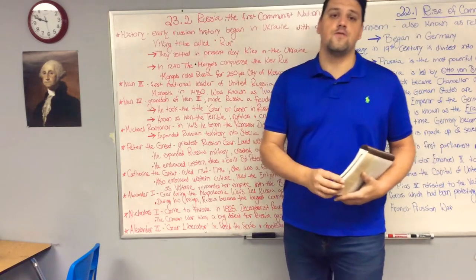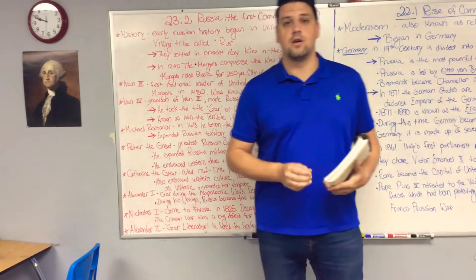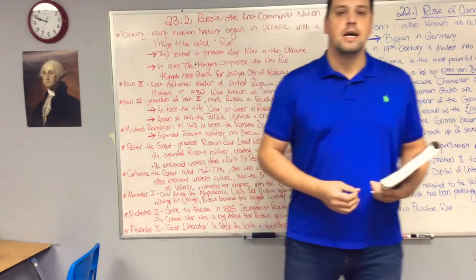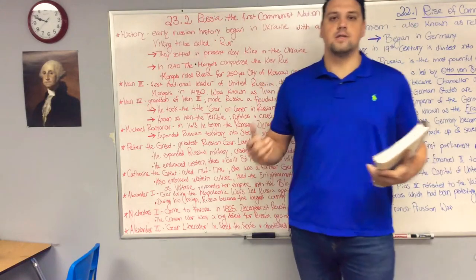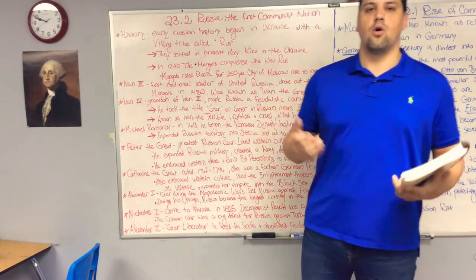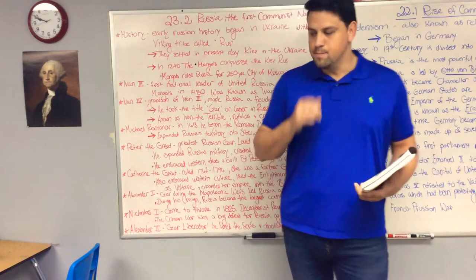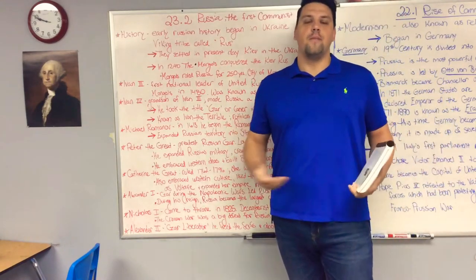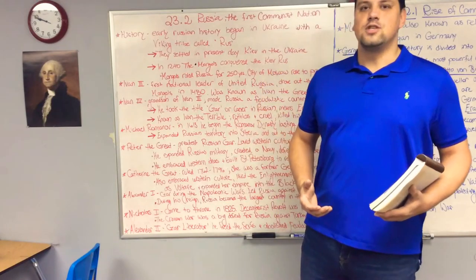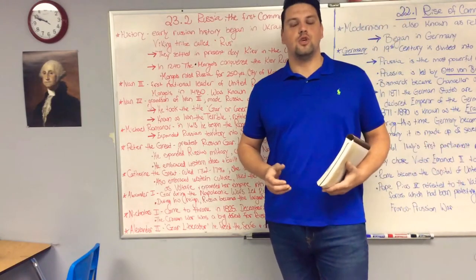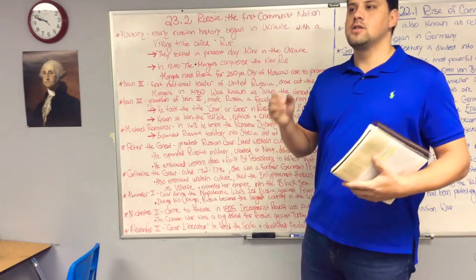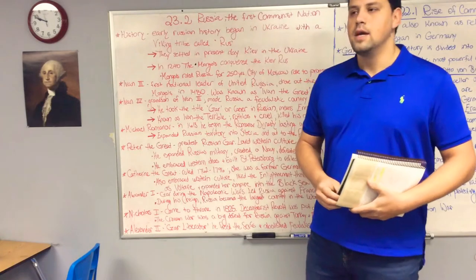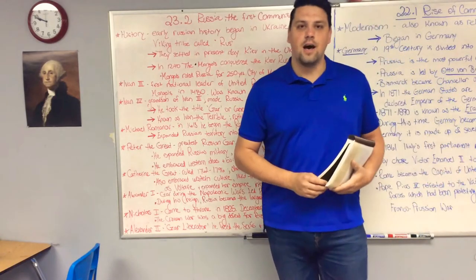Today we're going over the second section of chapter 23. The first section talked about the rise of communism. The second section is going to talk about the first communist country. Of course, that's the USSR or former Russia. Russia becomes the first fully communist country in 1922 when the Soviet Union is created, but there are other countries that also become communist and are still communist today.